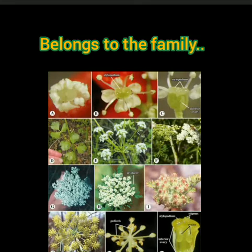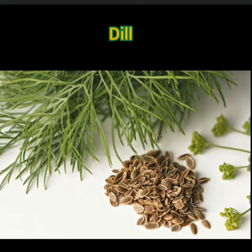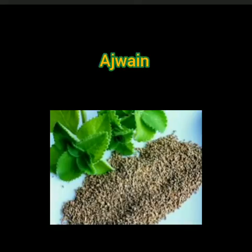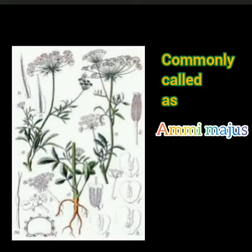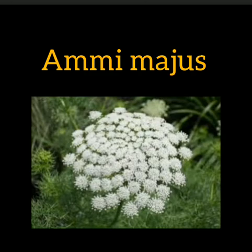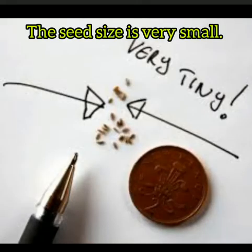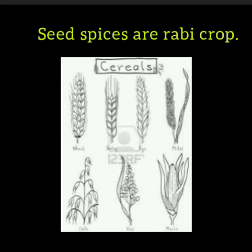Today I'm going to deal with a crop that belongs to the family Umbelliferae. It's an umbelliferous member like coriander, dill, caraway, or ajwain. It is commonly called Ammi majus botanically, and popularly known as Bishop's weed. The seed size is very small, so it is also referred to as greater Ammi. These seed spices are rabi crops.